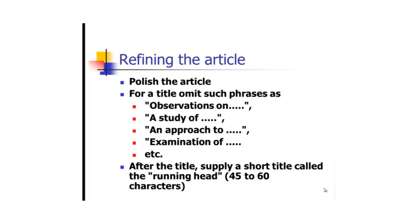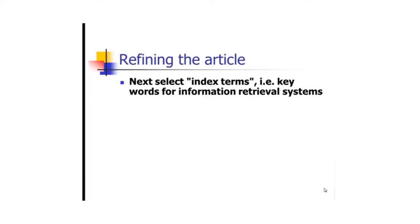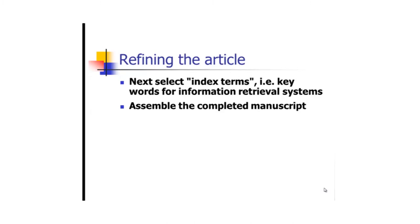You may also be required to put in a running head — approximately 45 to 60 characters that appears on every page — and create index terms used for information retrieval systems. It is you who chooses the words that best represent your article. Sometimes they ask for three or four index terms. You can sit with your co-authors, exchange ideas, and agree on the index terms that will retrieve your article from databases.